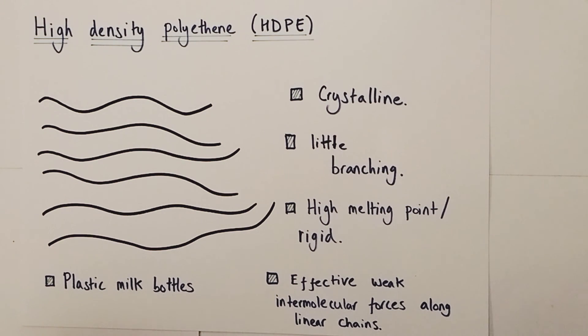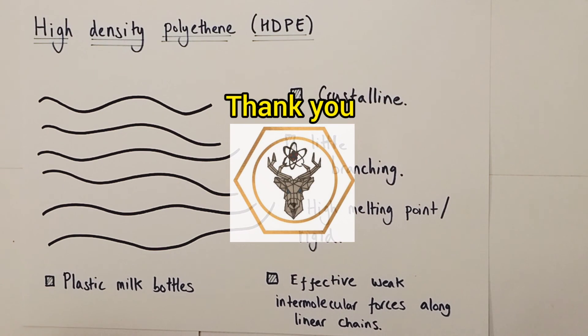So there you have it guys. That is a full summary of addition polymerization including lots and lots of examples of how to draw polymer repeating units and hopefully some reasonably interesting explanations of the differences between low density and high density polyethene. Really fantastic talking to you and I look forward to speaking to you again very soon. Goodbye.